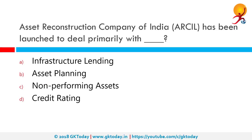Asset Reconstruction Company of India or ARCIL has been launched to deal primarily with non-performing assets. A non-performing asset or NPA refers to a classification for loans or advances that are in default or in arrears on scheduled payments of principal or interest. In most cases, debt is classified as non-performing when loan payments have not been made for a period of 90 days.